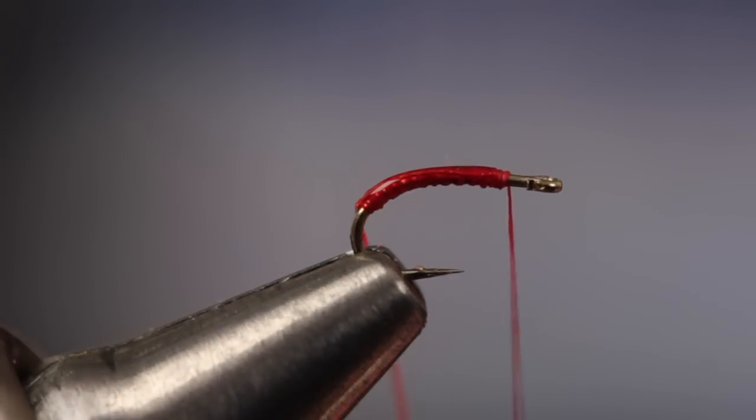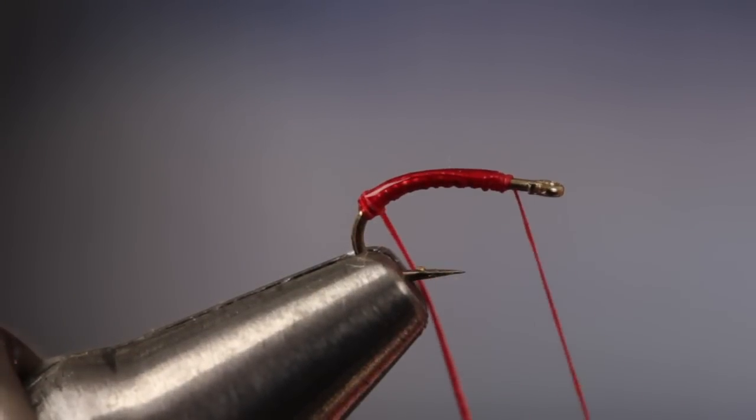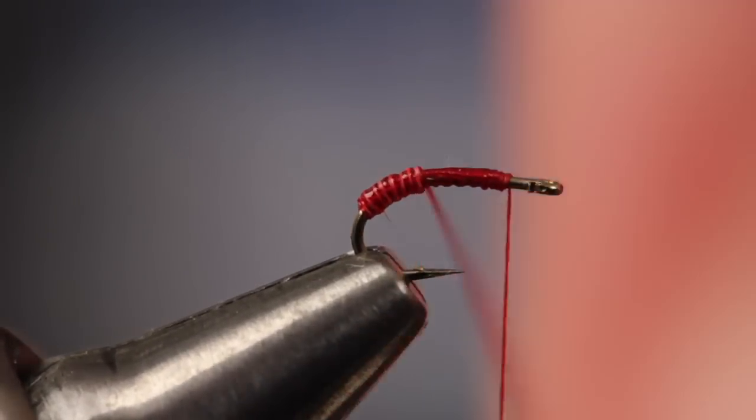Get hold of the stem and begin making adjacent wraps up the hook shank. With a little practice, you'll be able to make the body taper a bit by including the thicker part of the stem.